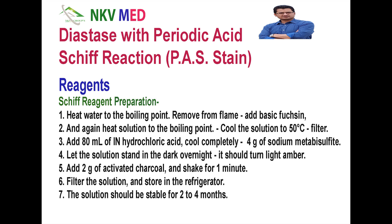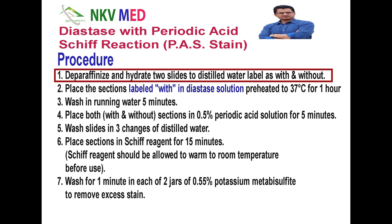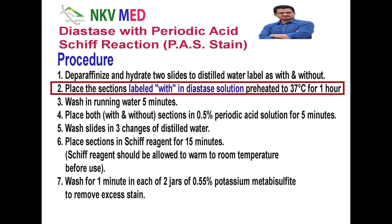Now let's discuss the procedure. We will deparaffinize and hydrate two slides to distilled water and label them with or without diastase. Then the section labeled with diastase, we will place it into the diastase solution for 5 to 10 minutes. Or if diastase solution is not available, human saliva can be used on the slide for at least 15 to 20 minutes. This is mainly to break down the glycogen into simple sugars.